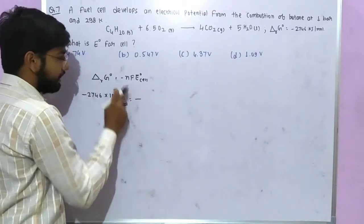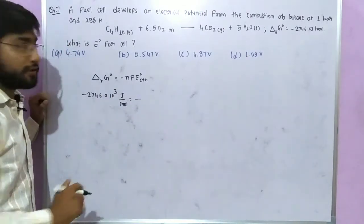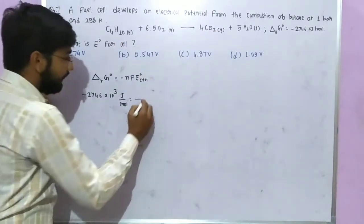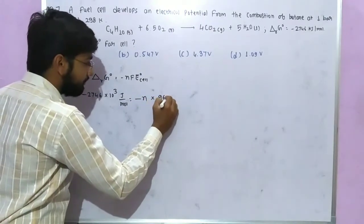It is equal to minus number of electrons transferred into this reaction into 96 into 5,000.